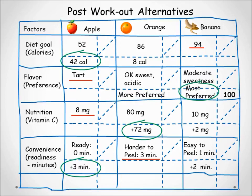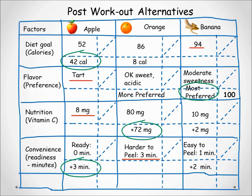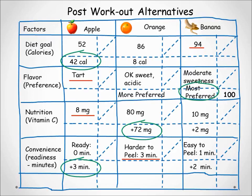All the rest of the advantages are compared against the paramount advantage — this is the anchoring relationship among all the advantages. Now we score the other circled advantages. The key is to assess the importance of the advantage, not the importance of the factor itself. We ask: which is more important in this decision — the apple's calorie advantage, or the orange's nutritional advantage?